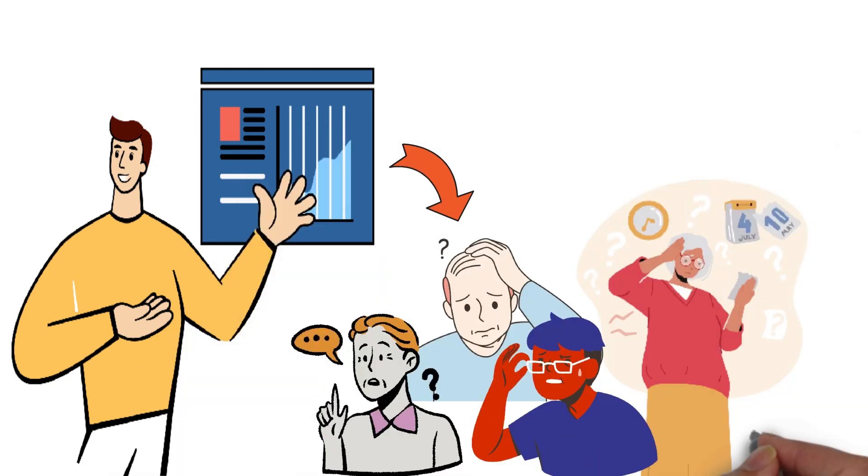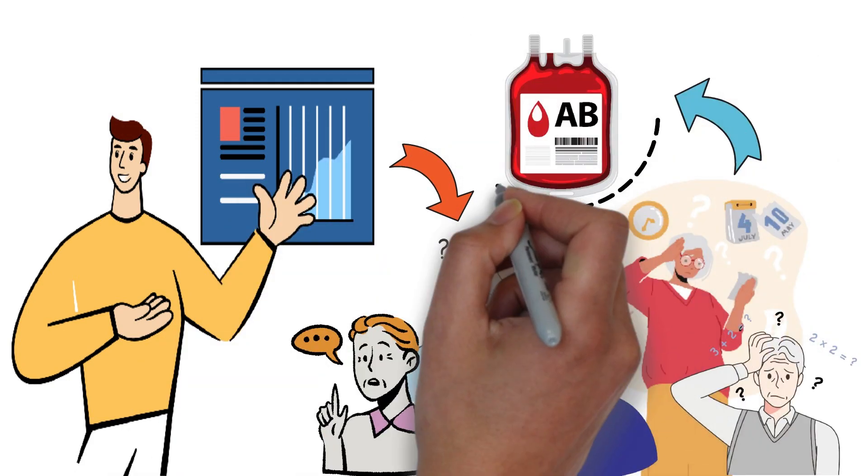Number three, memory. A small study showed that people with memory problems had type AB blood more than any other type.